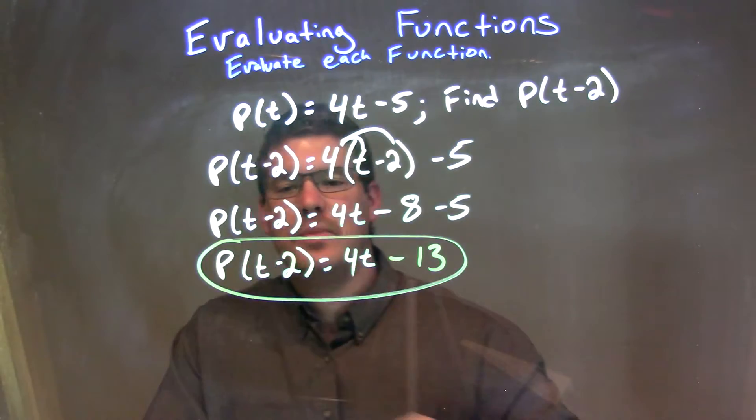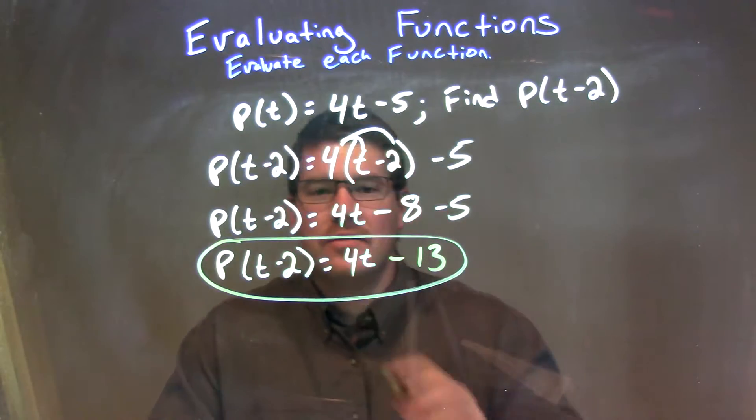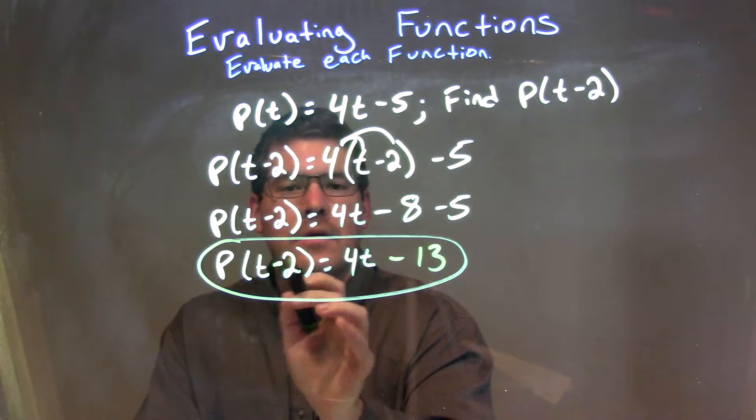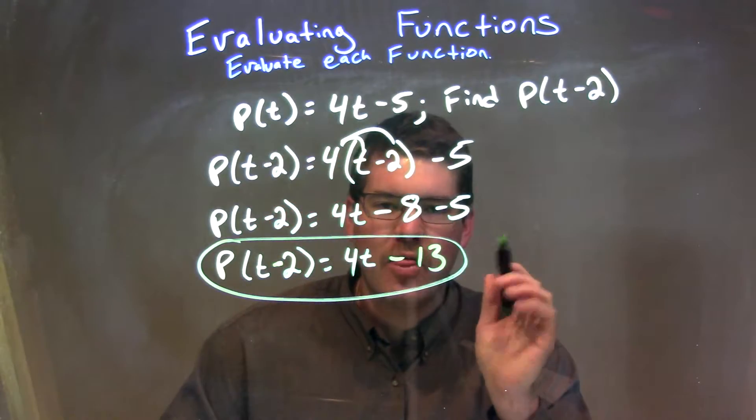So our final answer here is just P of t minus 2 is equal to 4t minus 13.